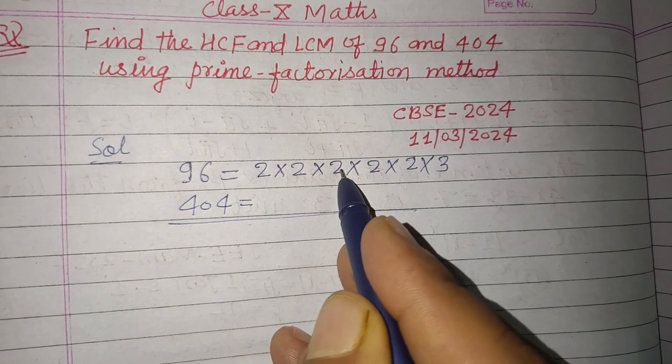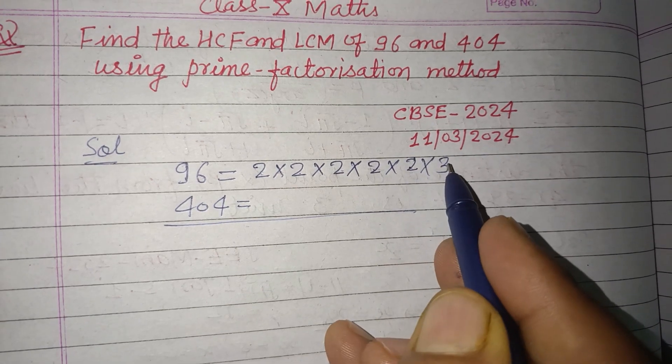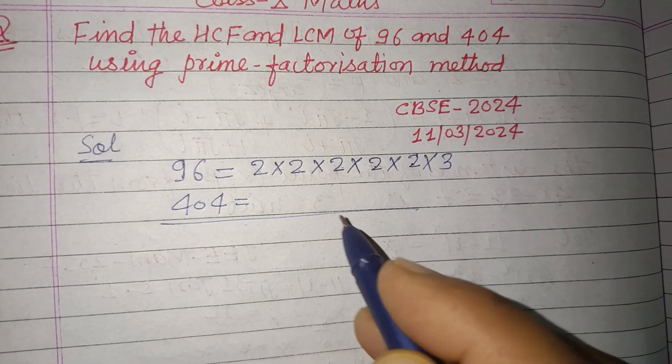So 2 times 2 is 4, times 2 is 8, times 2 is 16, times 2 is 32, times 3 equals 96.